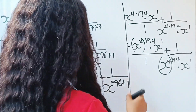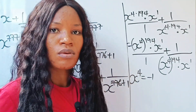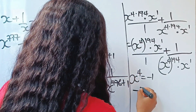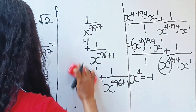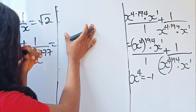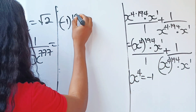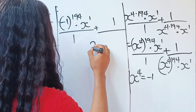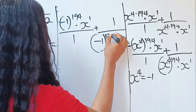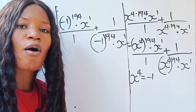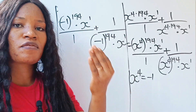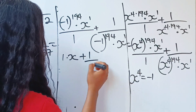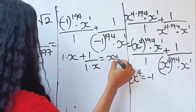Now recall that x to the power of 4 is equal to minus 1. Substituting, we get minus 1 raised to the power of 194, multiplied by x, plus 1 over minus 1 raised to the power of 194 multiplied by x. When you raise minus 1 to a positive even number, you get 1. So what we have is 1 multiplied by x plus 1 over 1 multiplied by x, which simplifies to x plus 1 over x.